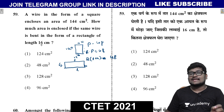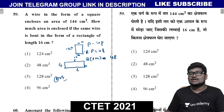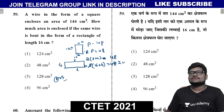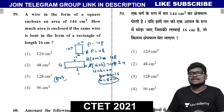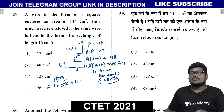So 2 × (16 + B) = 48, which gives 16 + B = 24, so B = 8 cm. The breadth of the rectangle is 8 cm.